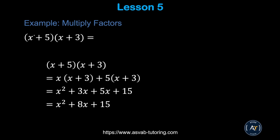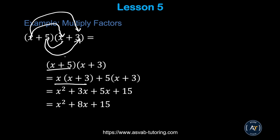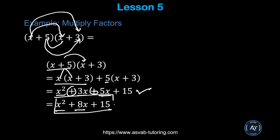Now we'll learn how to multiply factors. To multiply (x + 5)(x + 3), distribute each term: x times x is x squared, x times 3 is 3x, 5 times x is 5x, and 5 times 3 is 15. Now simplify by combining like terms: 3x and 5x are like terms, so they add to 8x. The final answer is x squared plus 8x plus 15.